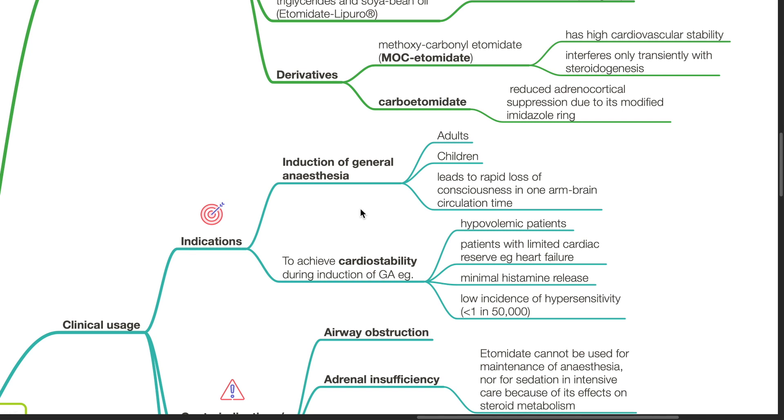Indications for etomidate include induction of general anesthesia in adults or children, leading to rapid loss of consciousness within one arm-brain circulation time. Etomidate is used to achieve cardiostability during induction of general anesthesia, which is particularly important in hypovolemic patients, patients with limited cardiac reserve such as in heart failure, and it causes minimal histamine release and low incidence of hypersensitivity.